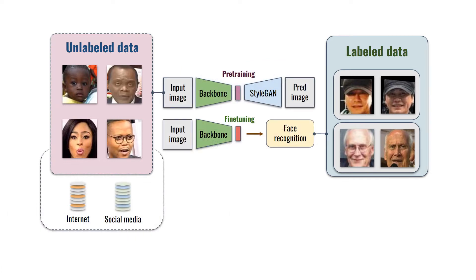In our approach, we make use of the StyleGAN generator and pre-train it together with the inverse network. The backbone, pre-trained to recover latent codes from an image, is later fine-tuned for the face recognition task.